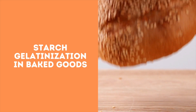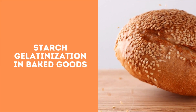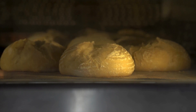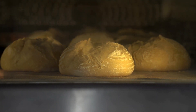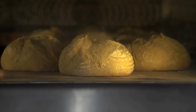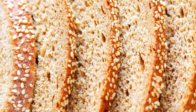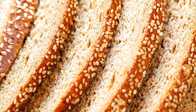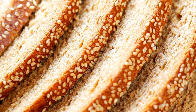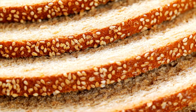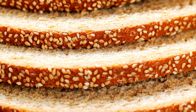During baking, gelatinized starch absorbs free water in the dough. As gas bubbles in the dough expand and eventually burst to form an air-continuous or porous structure, the starch gel or coagulated protein matrix surrounding these bubbles increases in viscosity to form a firm structure, essential for setting bread structure and crumb texture.